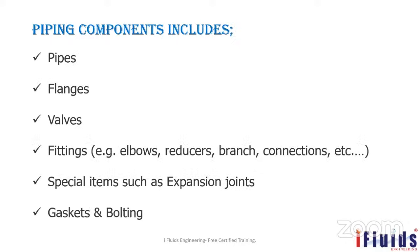Piping components include major pipes, flanges, valves, and fittings. Fittings include elbows, reducers, branches, and connections. Valves include gate valves, globe valves, ball valves, and needle valves. There are also special items such as expansion joints — also called bellows, which can be rubber or metallic — and gaskets and bolting wherever flanges are present.